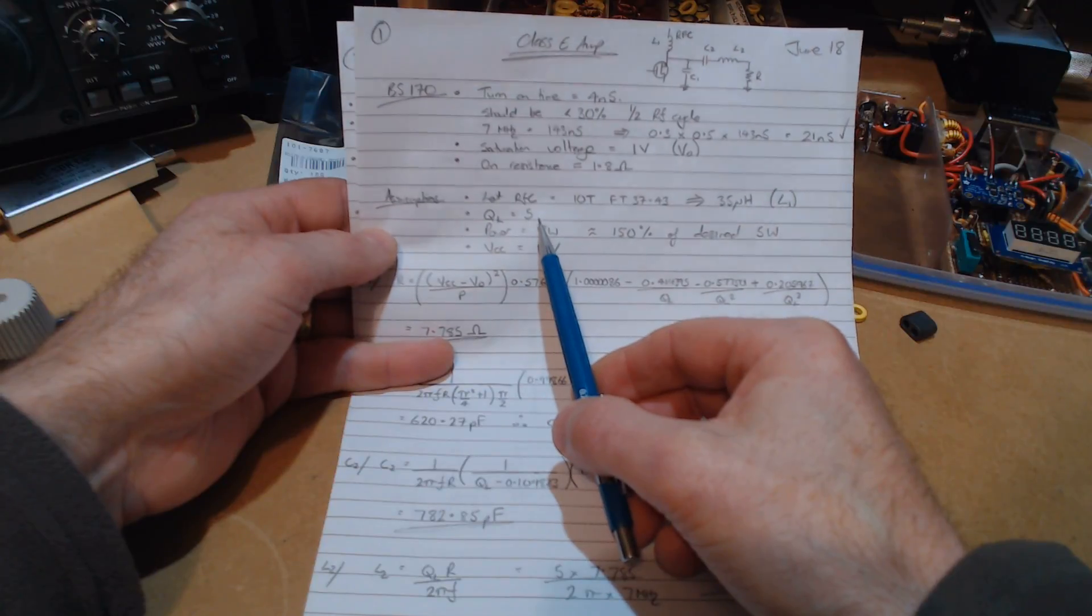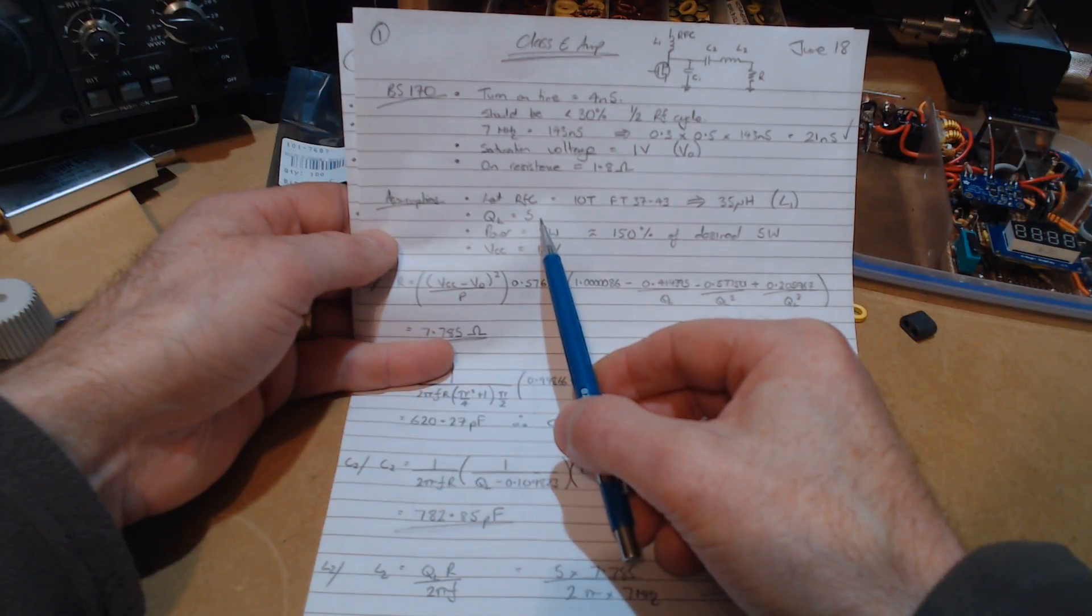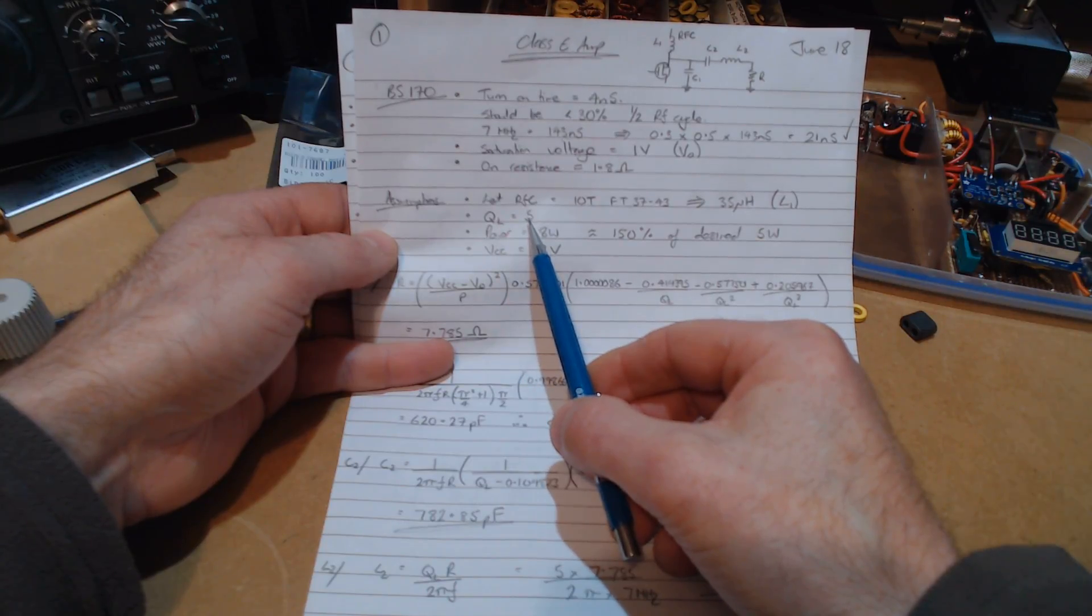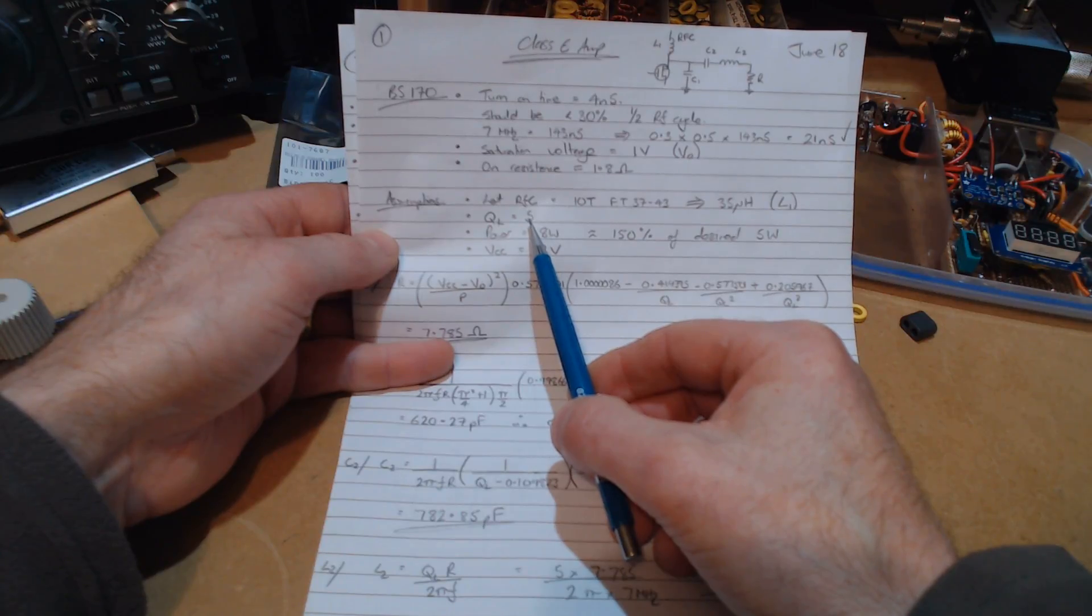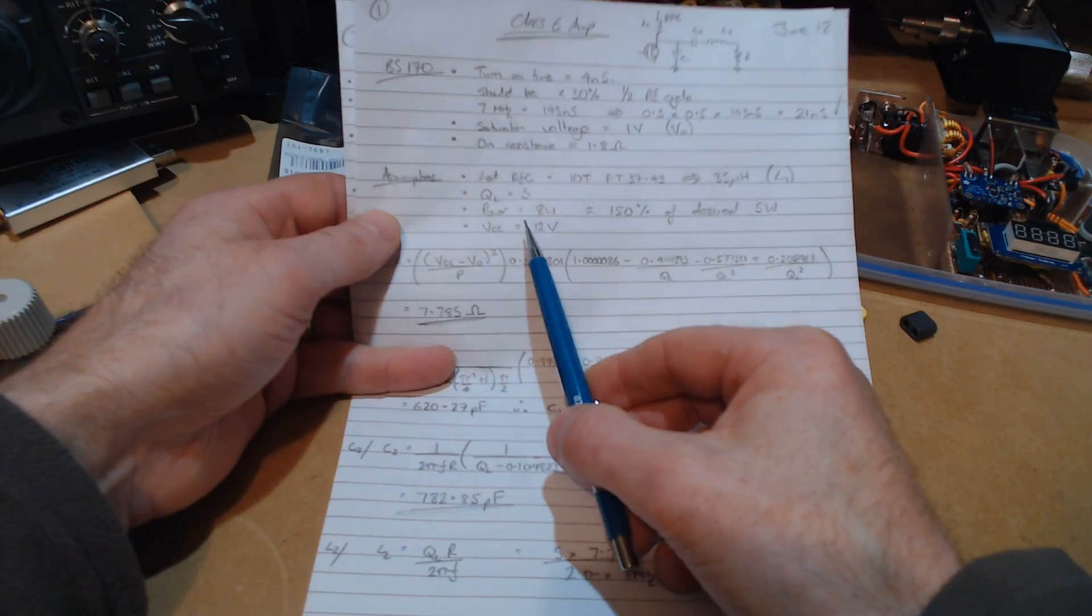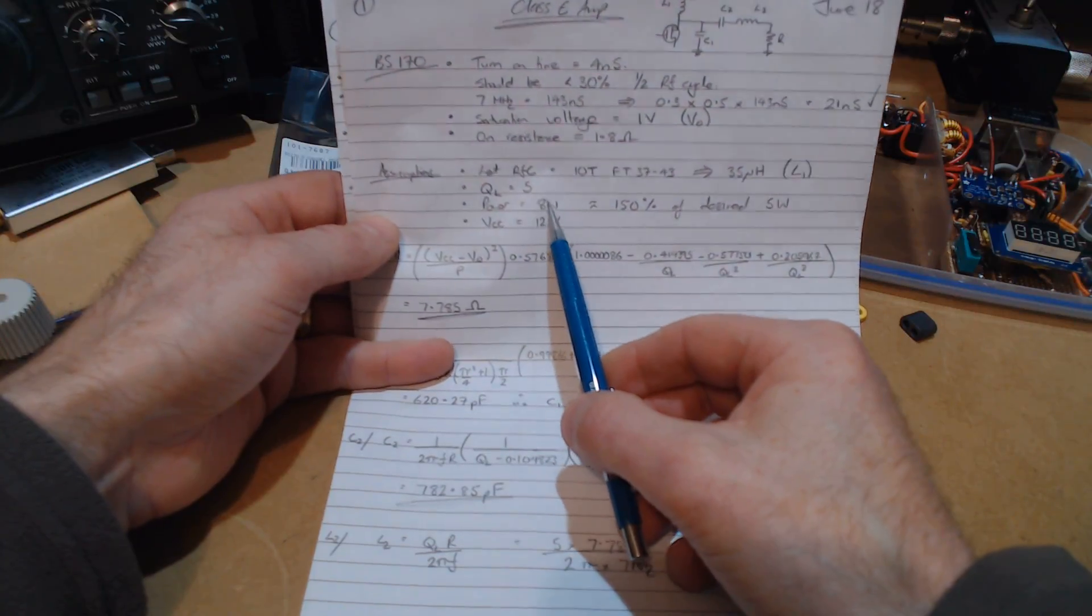For that radio frequency choke, it's said in the paper that it wasn't crucial on what that should be. So I'm just going to use what I've used in the past which is 10 turns on an FT37-43. That equates to 35 microhenries which we'll use as L1. The online tools suggest that a good starting value for our loaded Q is 5. That particular paper talks about 1.7 to infinity as the value you can use.